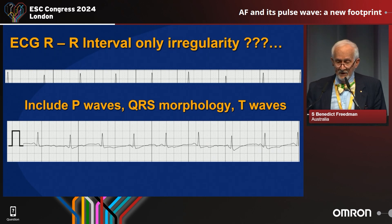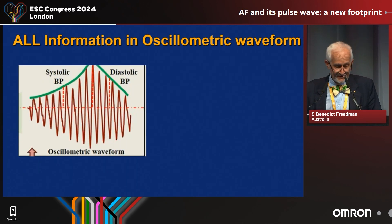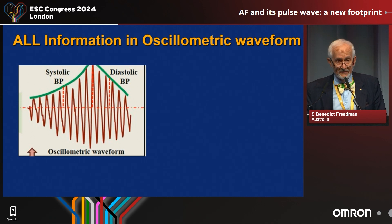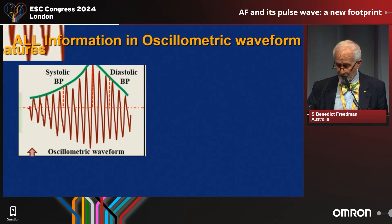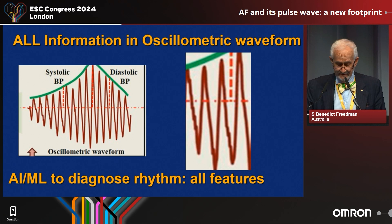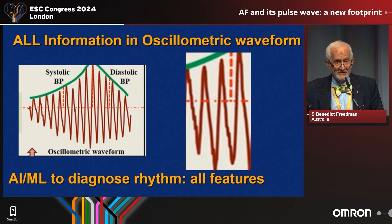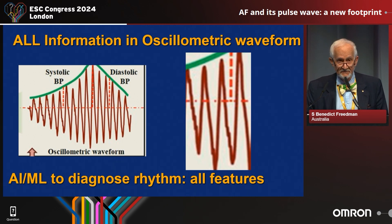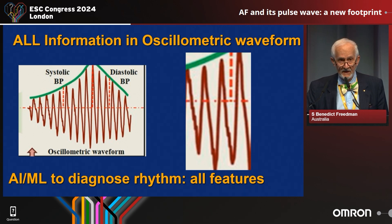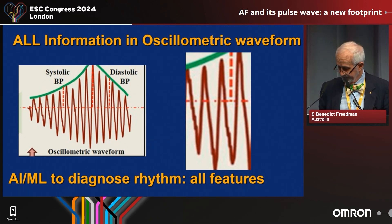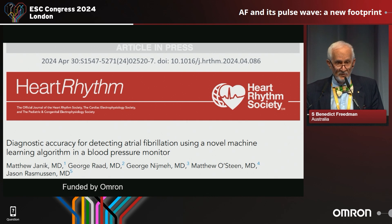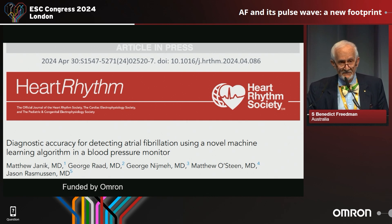In the same way, in oscillometry there is a lot more information if we look a bit more closely — a lot more information in the pulse waveform. We can use artificial intelligence and machine learning to diagnose rhythm using not just the irregularity index, but all things that the waveform tells us — and many that we don't actually understand, because the machine learning just looks at it and we don't actually know how it picks it.